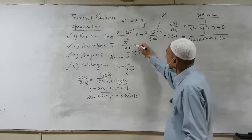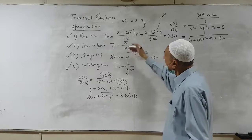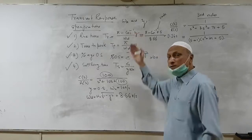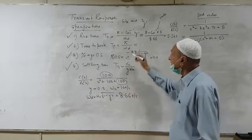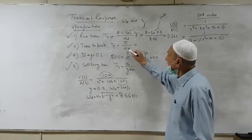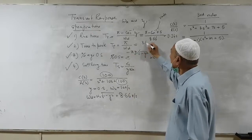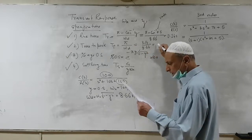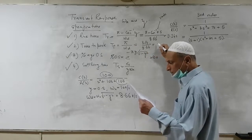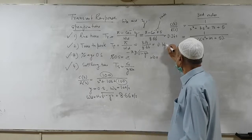Likewise, the peak time is similar but in this case you are not considering the cosine-inverse of zeta. So it is simply pi divided by omega d: 3.14 divided by 8.66. This gives you the peak time, which is 0.36 seconds.